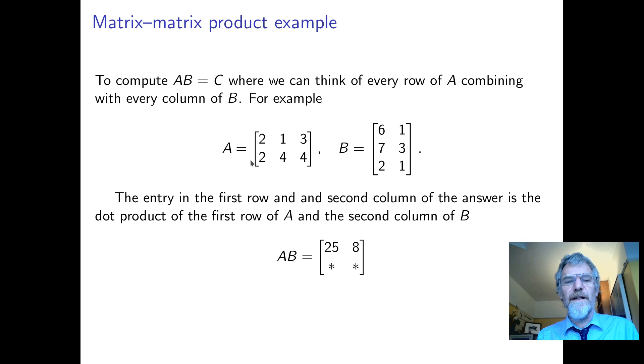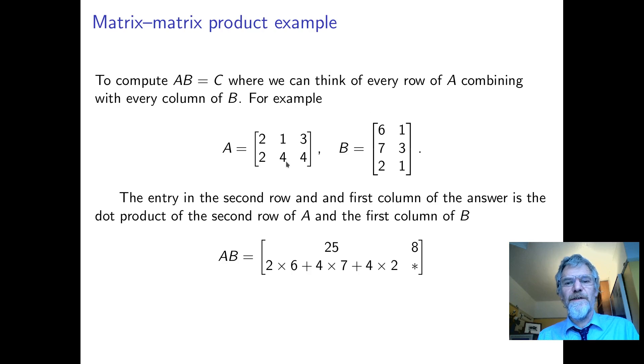Then we go on to the second row. So we take the second row of A and the first column of B. So it's four times six, two times seven, and four times two.